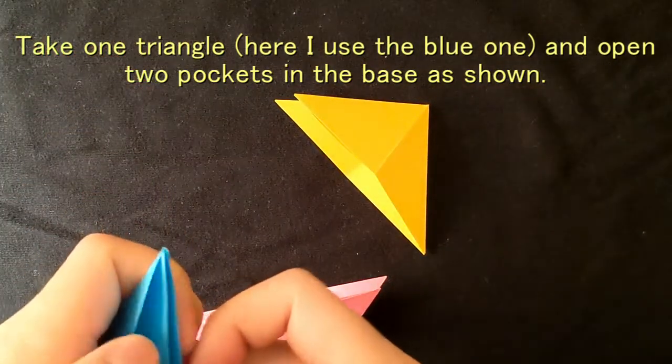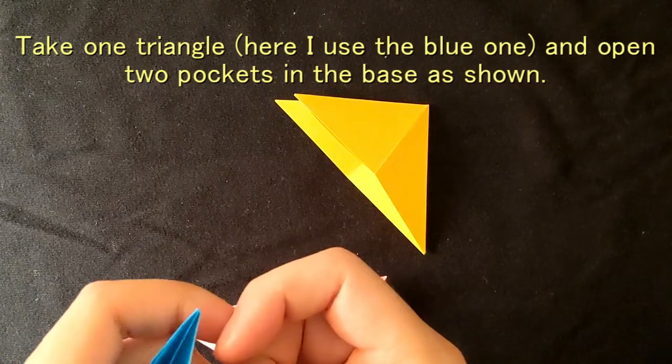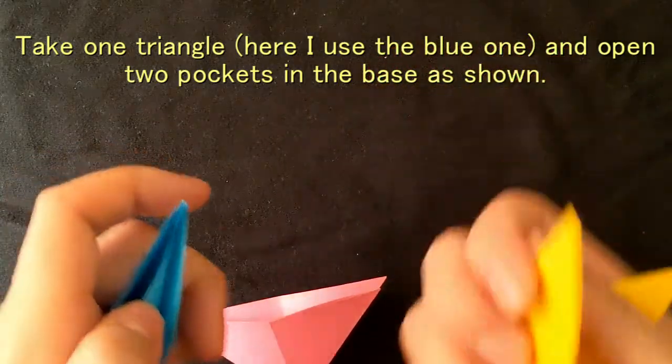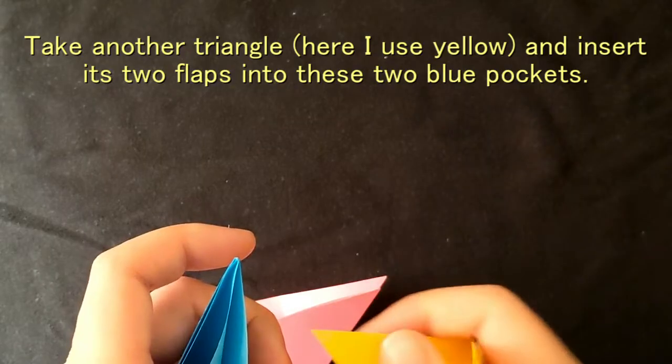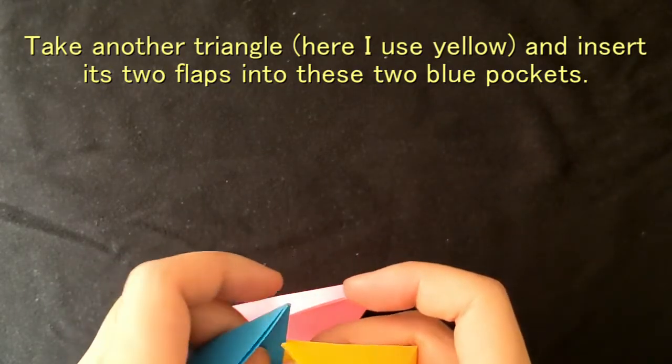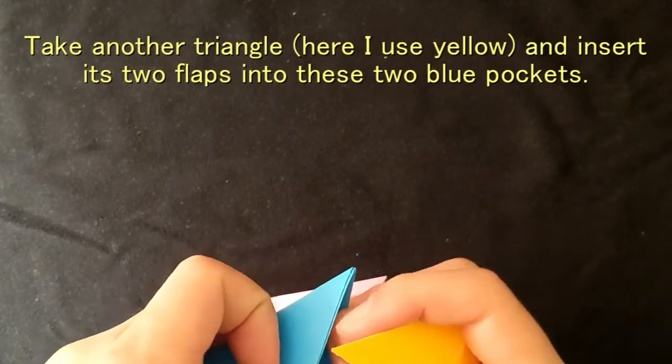Take one triangle, here I use the blue one, and open the two pockets in the base as shown. Take another triangle, here I use yellow, and insert its two flaps into these two blue pockets.